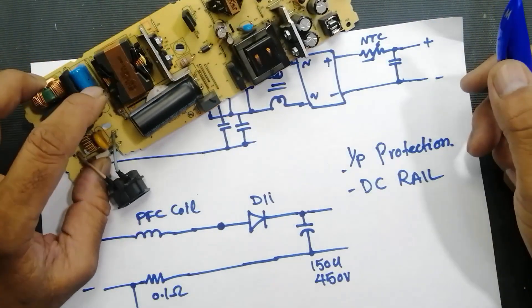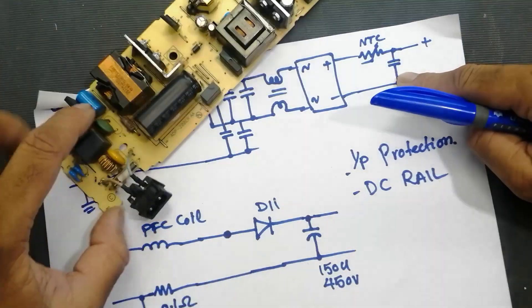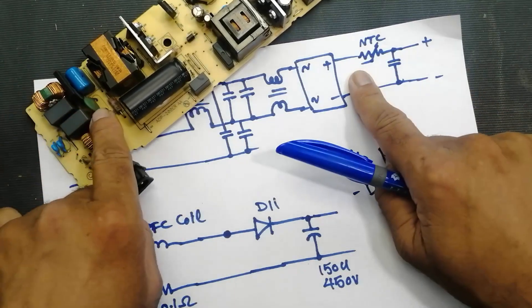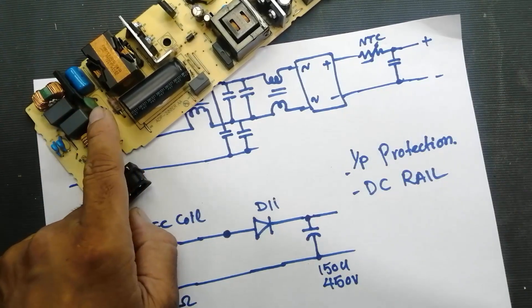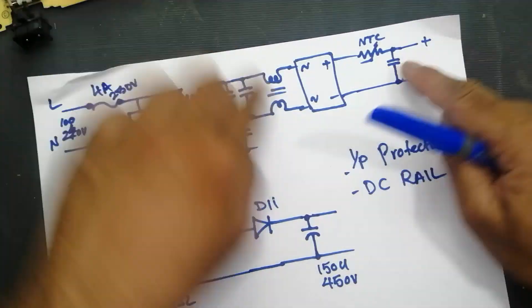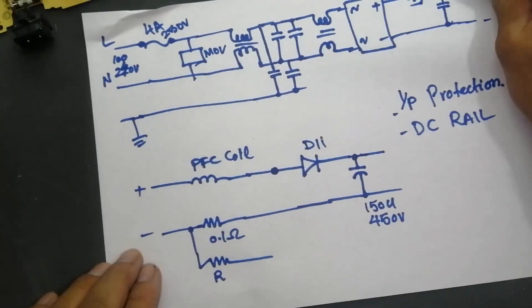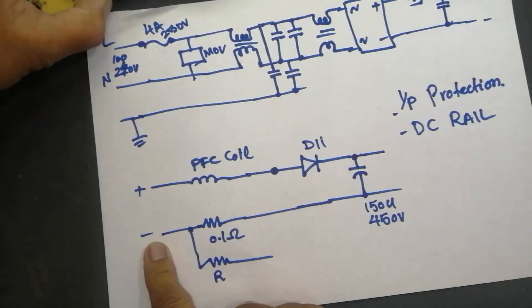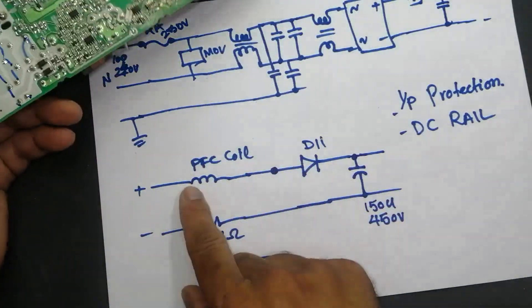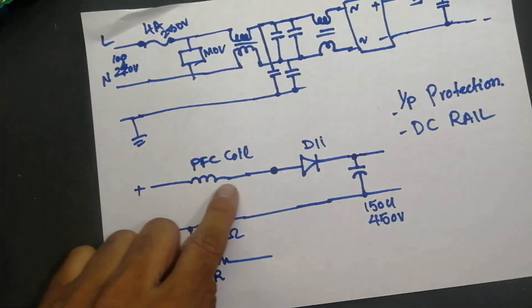And after that we have a second stage filter. We have bridge rectifier, then we have our filter capacitor here in the output of the bridge, that is here. And then we have NTC, negative temperature coefficient resistors. Now these positive voltage and negative voltage are applied here to the PFC coil.